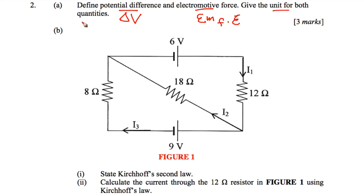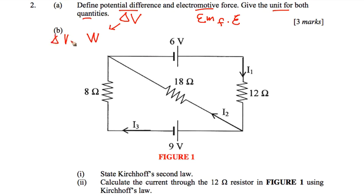Potential difference, or delta V, is defined as the work done to bring a charge from one point to another point. You can refer to the equation: delta V is equal to the work done to bring a point charge from one point to another.